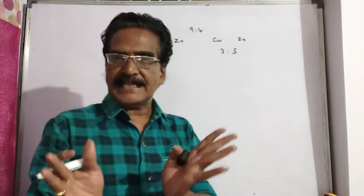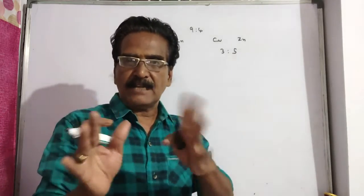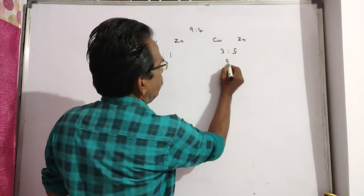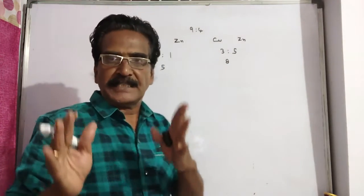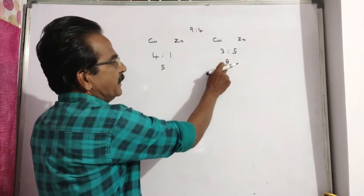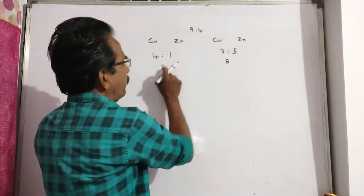Friends, first let us make the quantities equal. See, this is 4 plus 1, 5 parts. This is 3 plus 5, 8 parts. Now, we have to make the quantities equal. Let us multiply this ratio by 8. Let us multiply this ratio by 5.